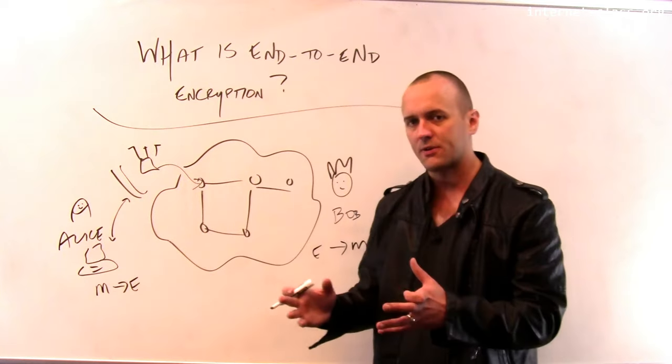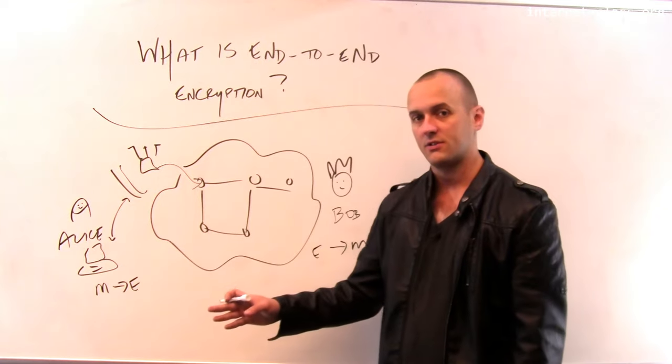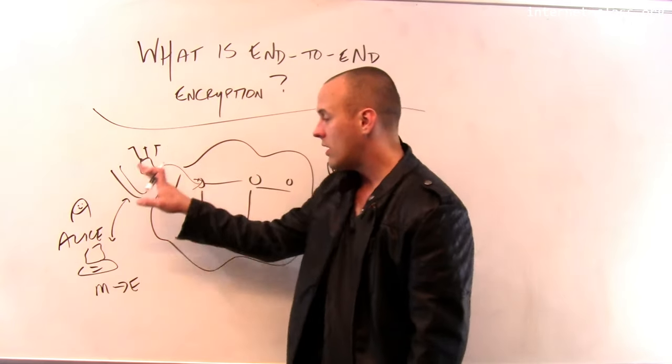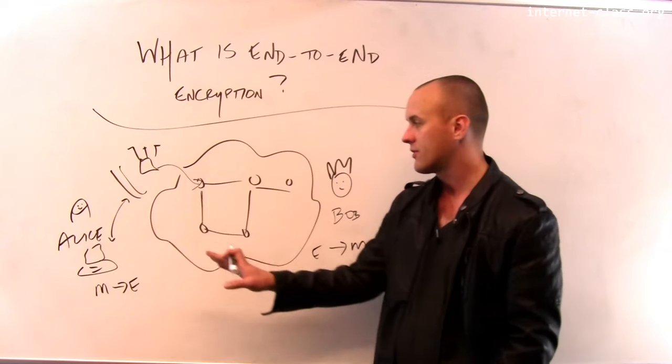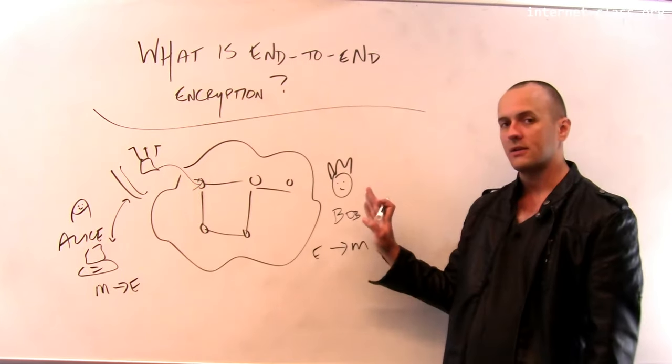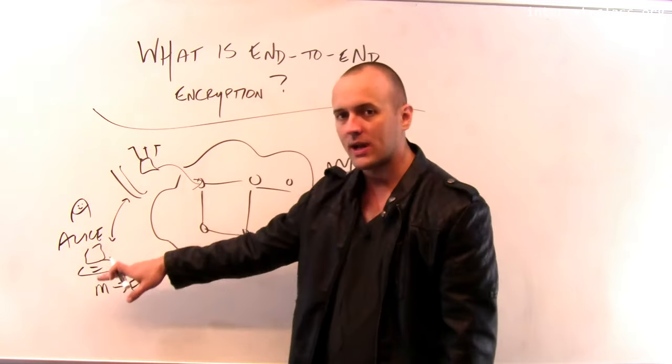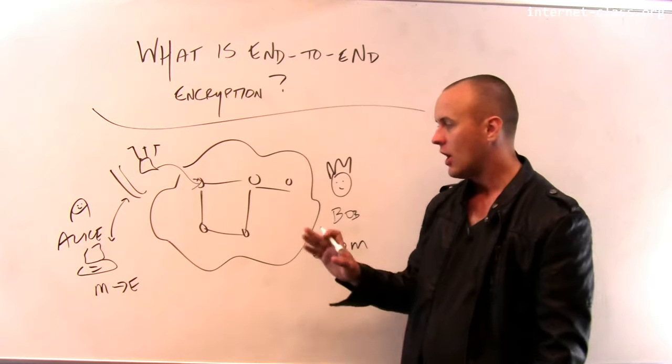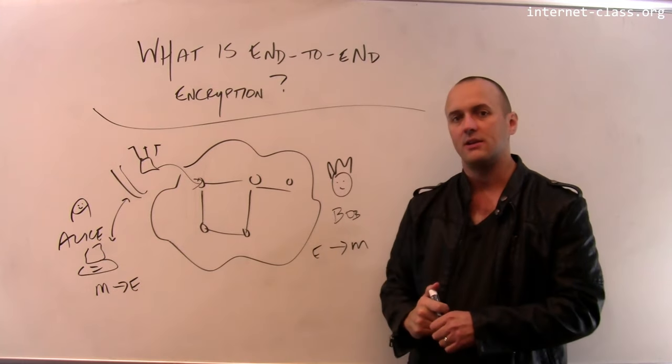So end-to-end encryption refers to cases where the encryption is done by the end hosts that are involved in the transaction. So all of the messages that are exchanged, all the traffic that flows from one part of the internet to the other, contains encrypted data in that case. Once Alice and Bob agree on a way to encrypt their connection, all of the packets that they exchange are encrypted and protected during transit.